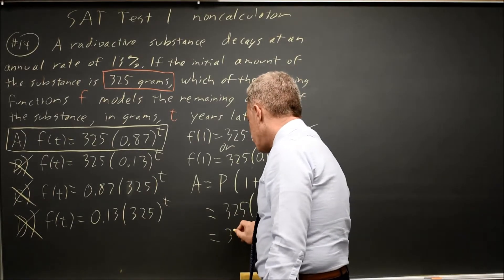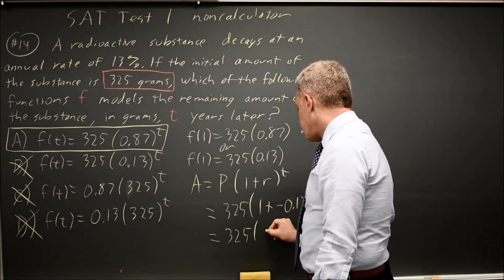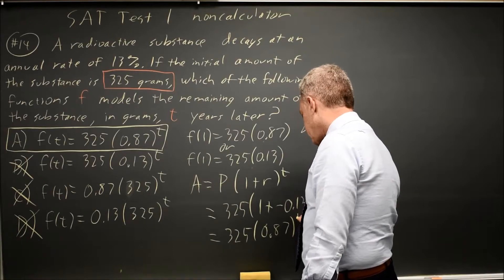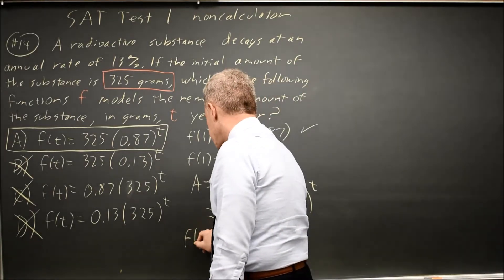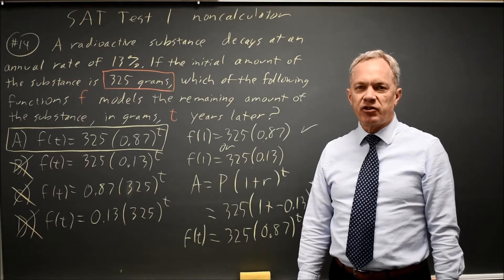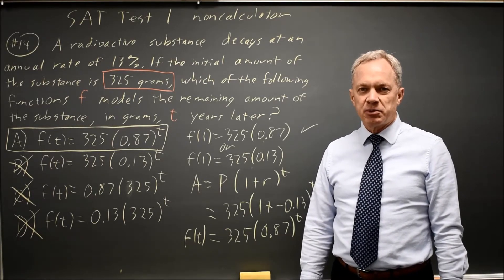So this is 325 times 1 minus 0.13, which is 0.87, and that's to the t, which gives me the same answer. This is slightly faster if you're good with exponential growth and decay.